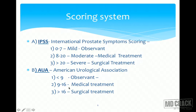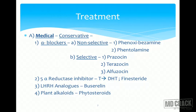The American Urological Association has given a different guideline with a slightly different score. Less than 9 is considered mild and falls in the observant zone. 9 to 16 warrants medical treatment, and a score of more than 16 requires definitive surgical treatment.